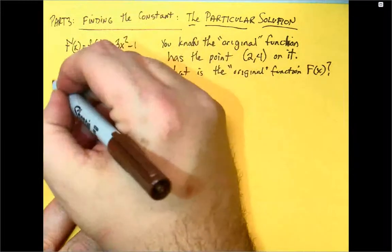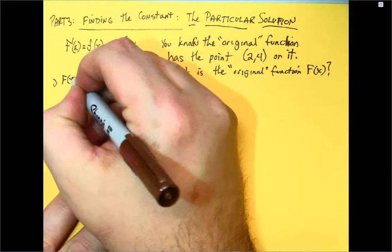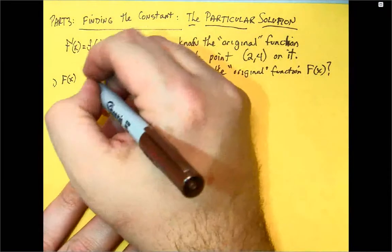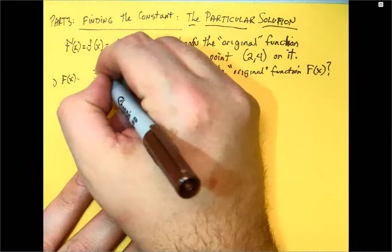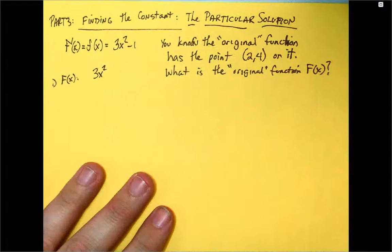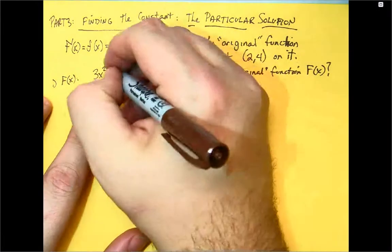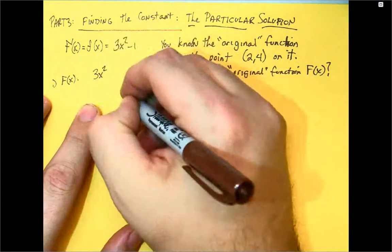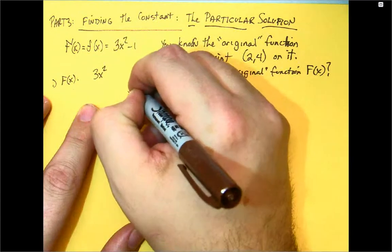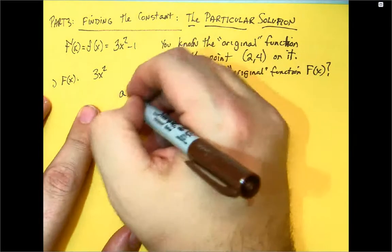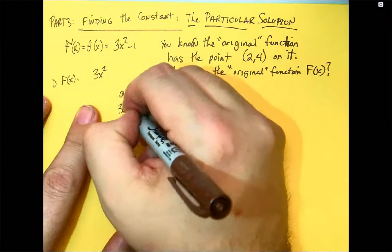Now, first, we need f of x. So I need to take a look at what gives me a derivative 3x squared. Well, since I know that's a 2, it's going to be a 3, so it's going to be x cubed. And if we say ax cubed and just go with that,